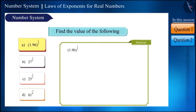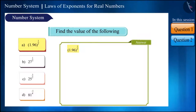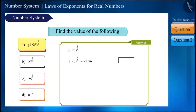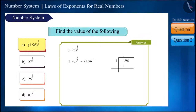The first option, 1.96, has 1/2 in its power — that is, we have to find the square root of 1.96. In the previous class we learned to find the square root of decimal numbers. Solving it this way, its square root is 1.4.